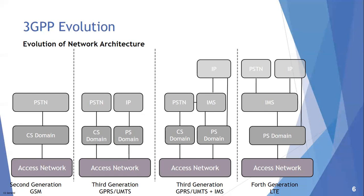All of them have access networks. From the core side, the access networks in 2G we used to call the GSM radio access network. But in 3G, it was the UTRAN, which is the UMTS Terrestrial Radio Access Network. And in 4G, it's called EUTRAN, which is the Enhanced UTRAN.